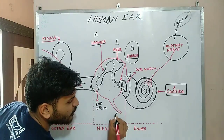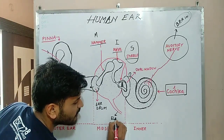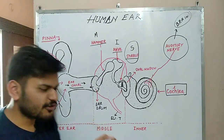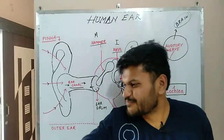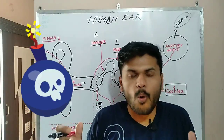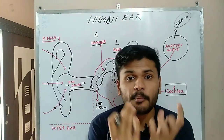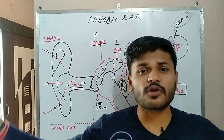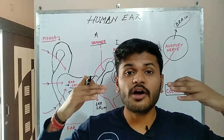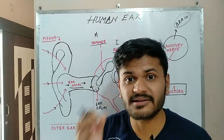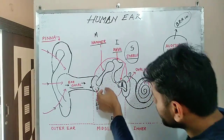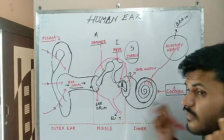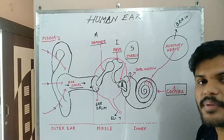In the middle ear there is also a tube called the Eustachian tube. Its function is to maintain pressure equilibrium. If a bomb or firecracker explodes near you, you should open your mouth — this helps maintain air pressure so that excessive sound pressure does not harm your eardrum. This tube releases excess pressure, connected toward the mouth, protecting the ear.